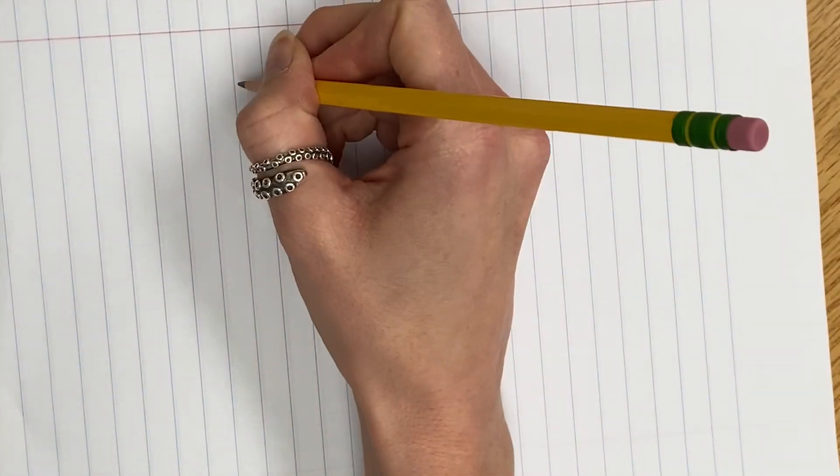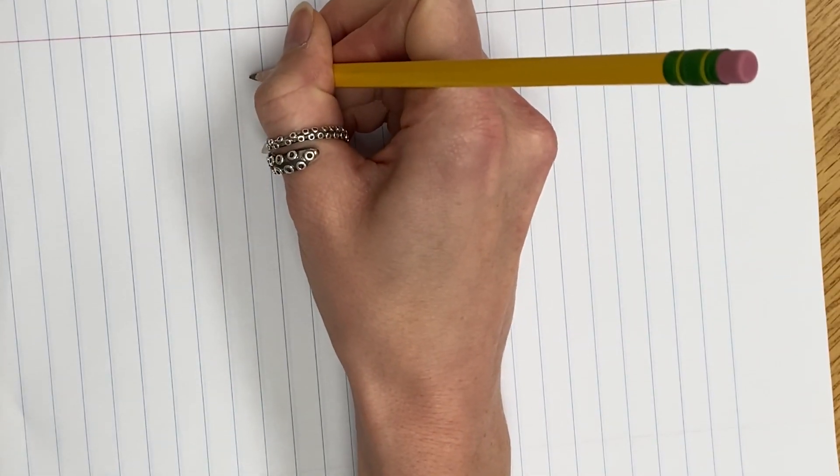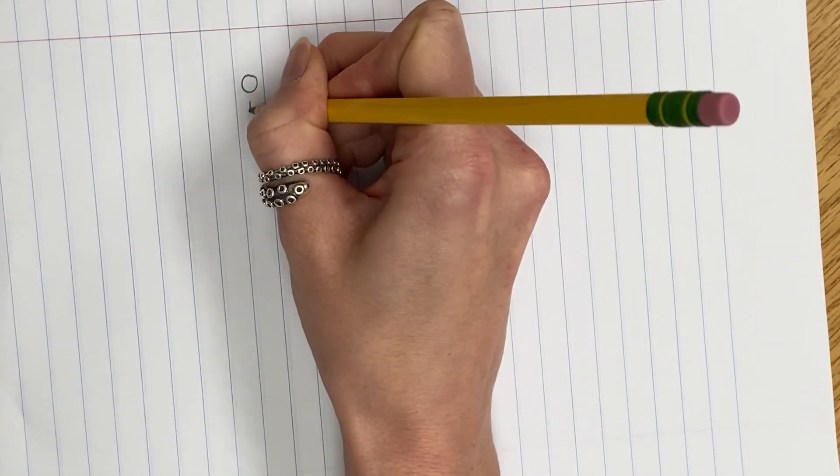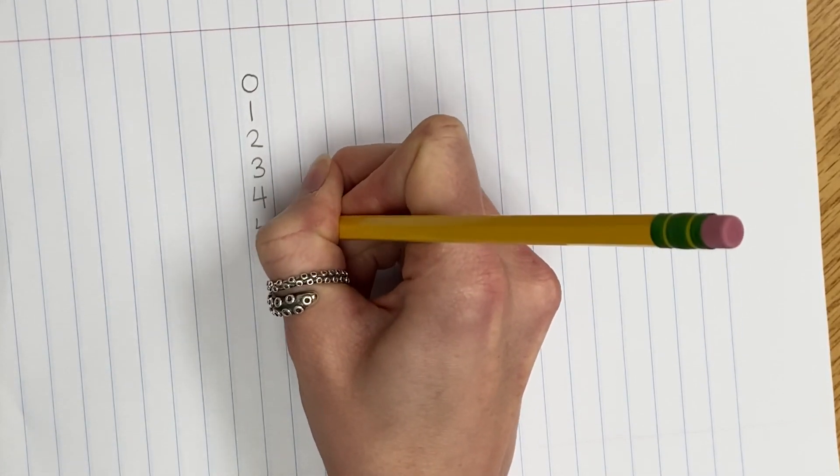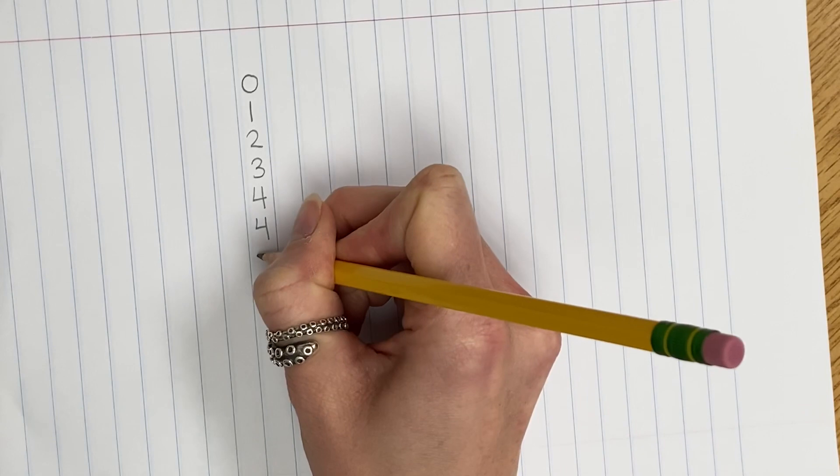So I want to start with our eights. We're going to start by numbering zero through eight, and we're going to double our fours. Remember that four plus four equals eight.